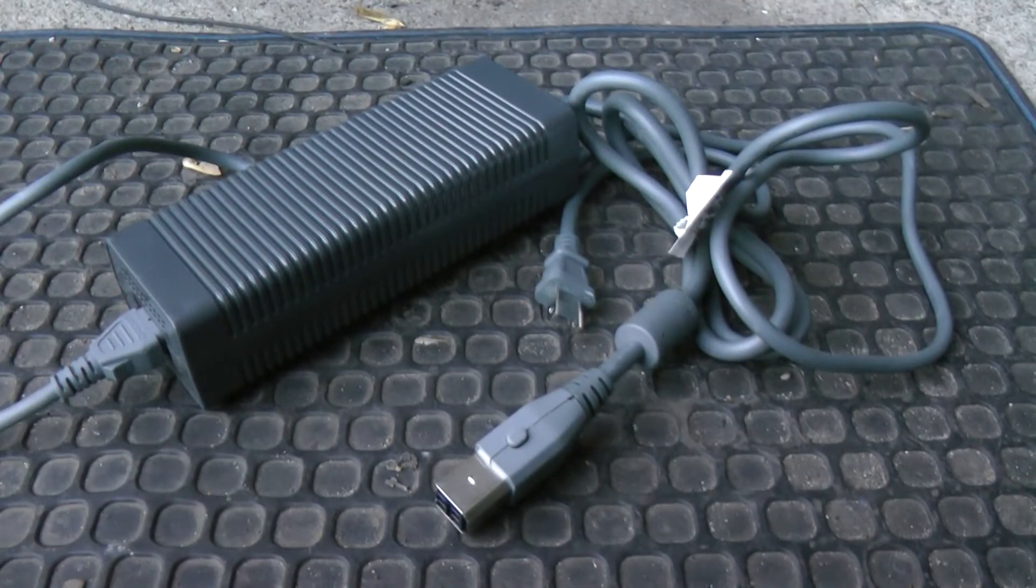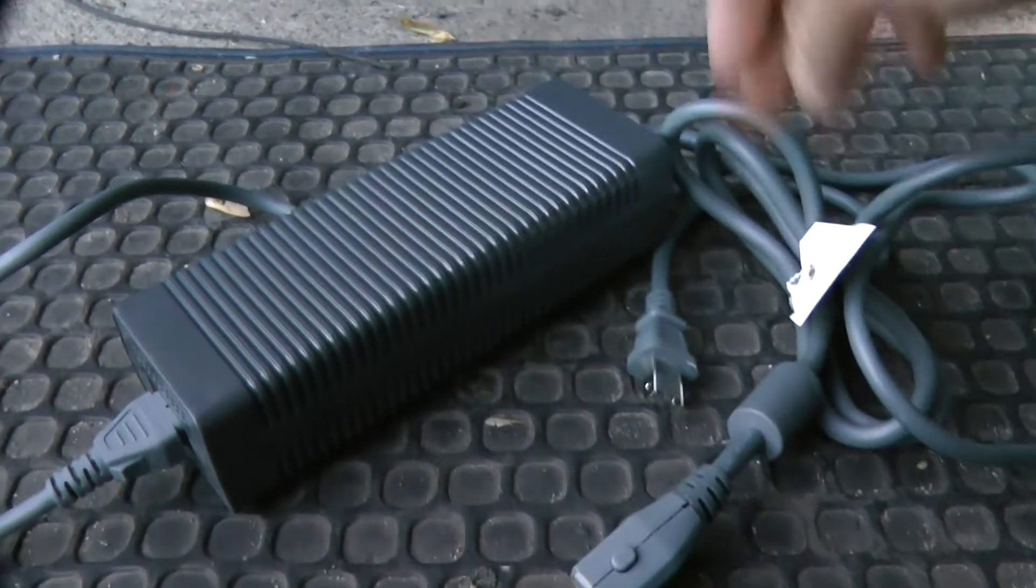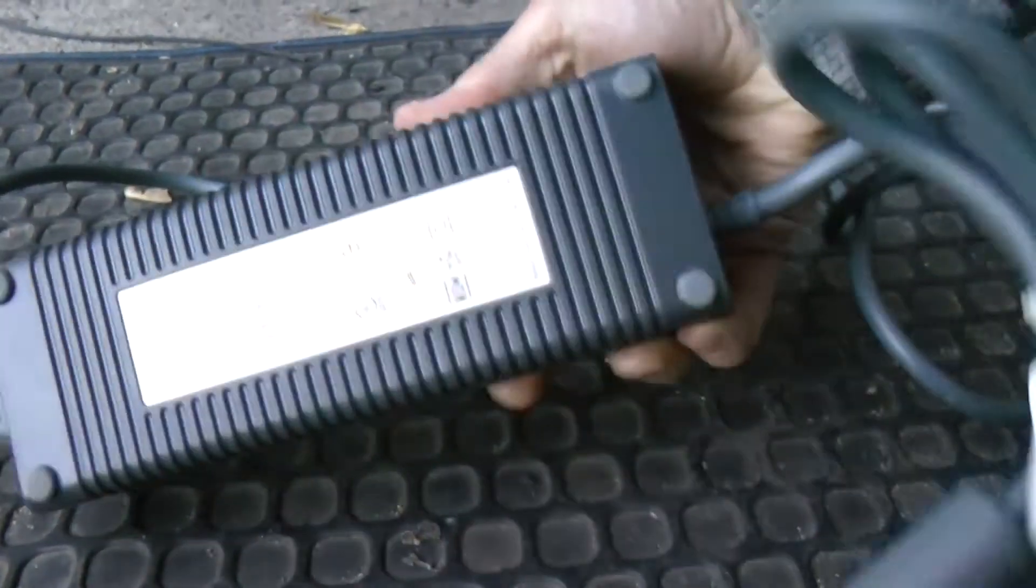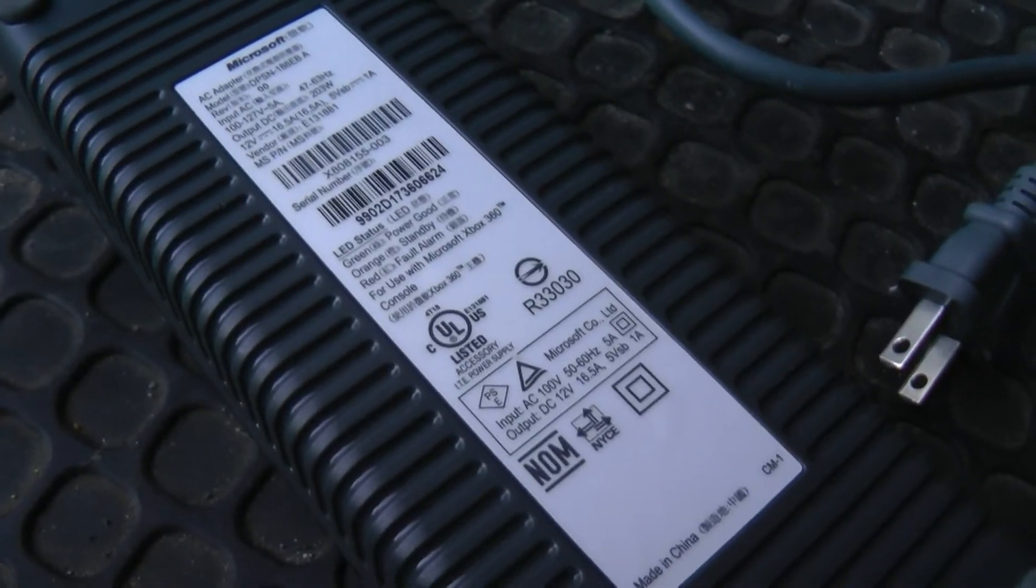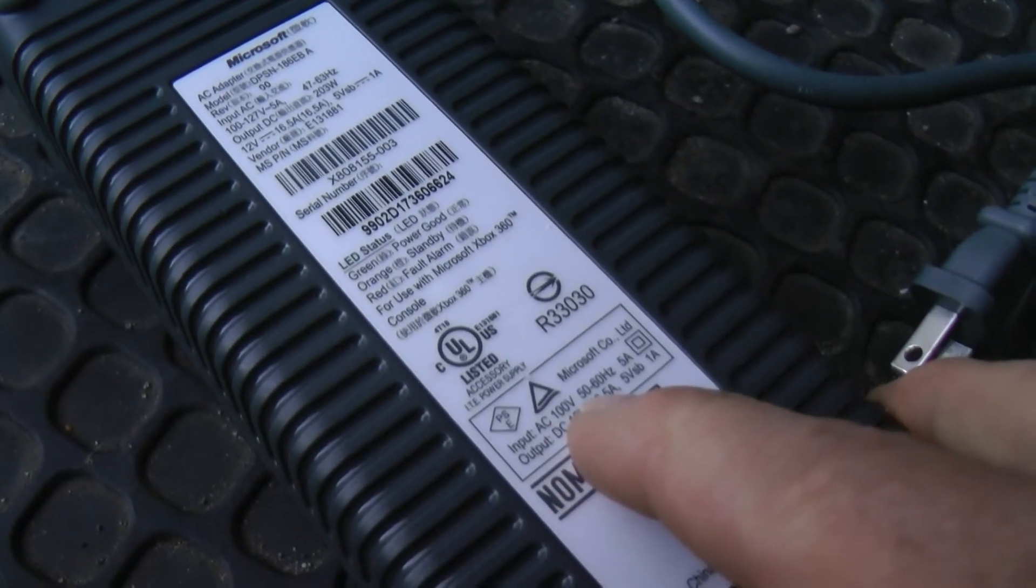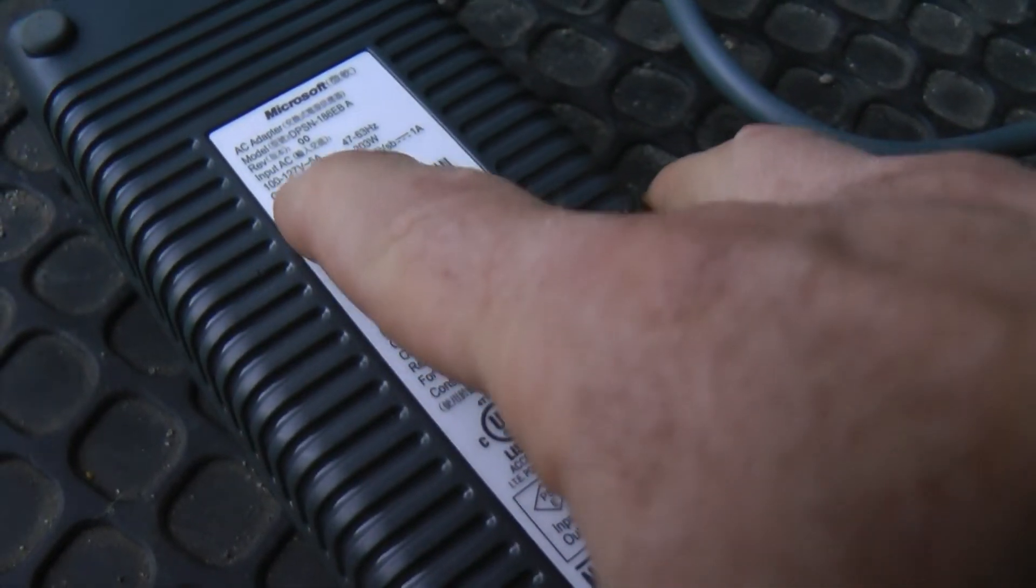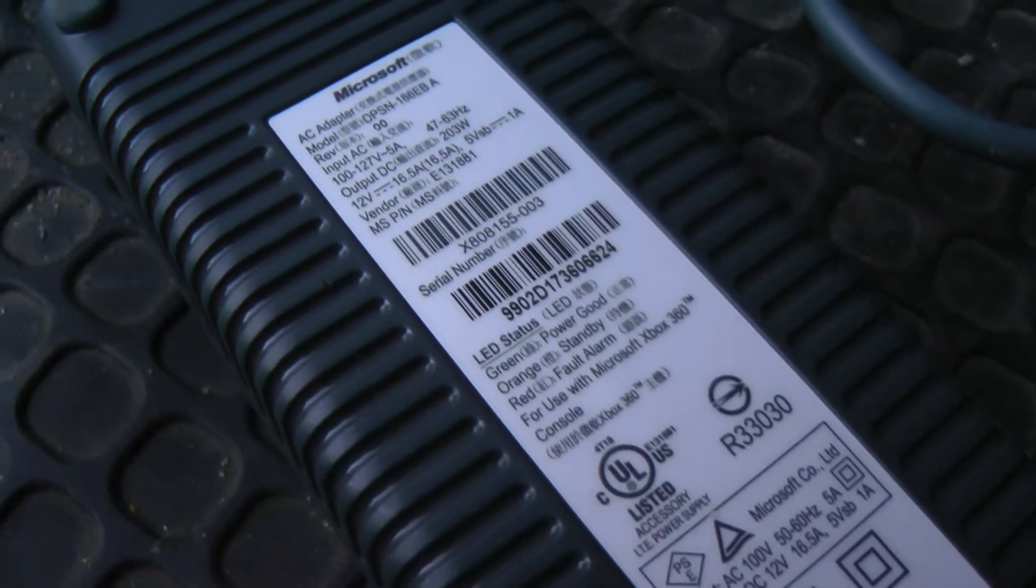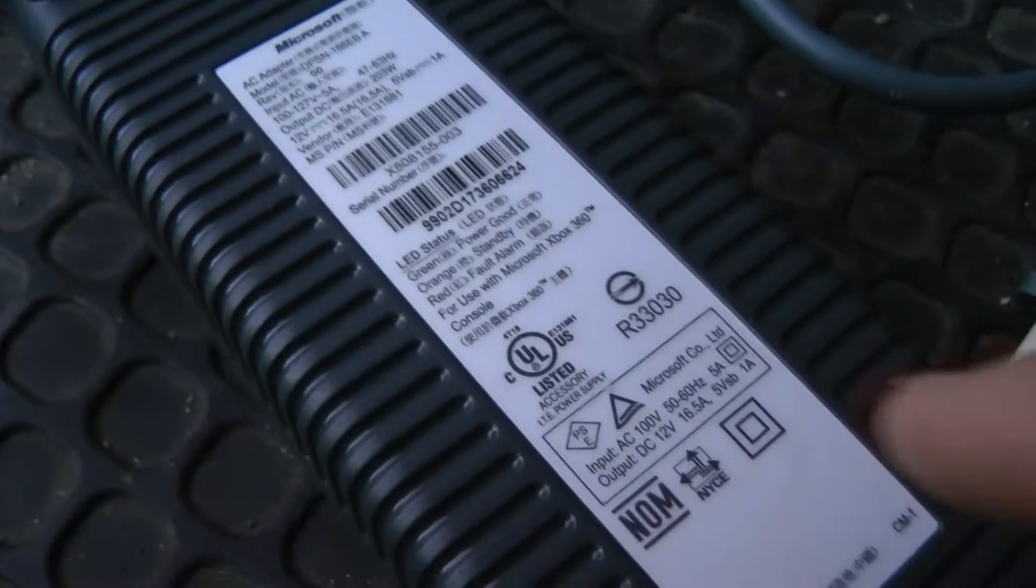I can't be the only one that has either an extra Xbox power supply lying around or picked it up at the Goodwill for five bucks. This is a good 12 volt power supply that puts out 16.5 amps, which is about the equivalent of 203 watts. It also has a five volt output.